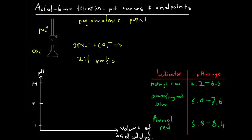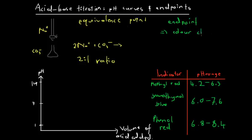Similarly, we defined something called the end point of a titration. The end point is identified by a colour change — it occurs when the solution in the conical flask suddenly changes colour, and that is when we end the titration. We stop the process, measure the titer we've used, and measure the amount of solution released from the burette.